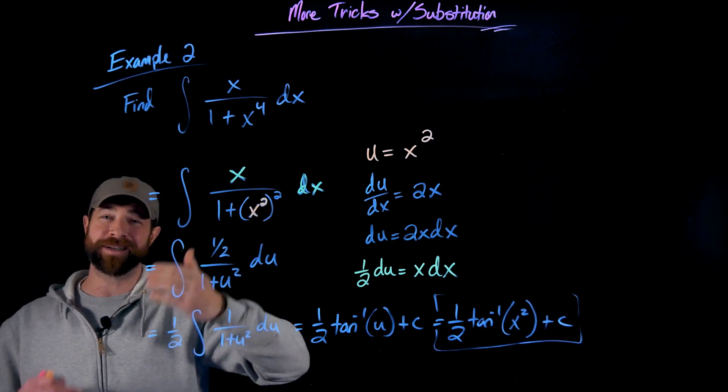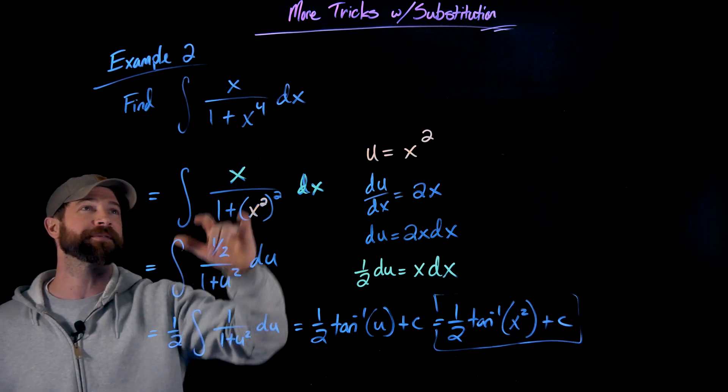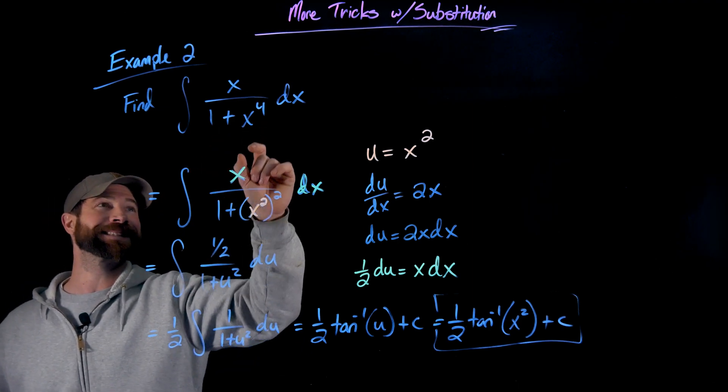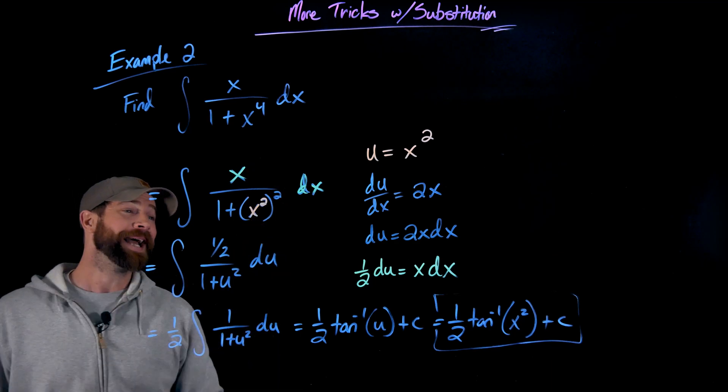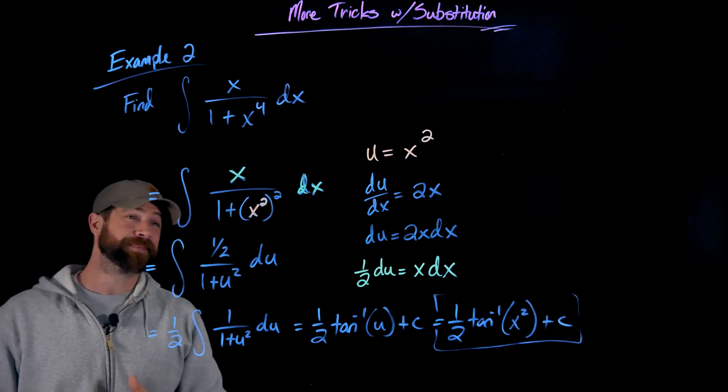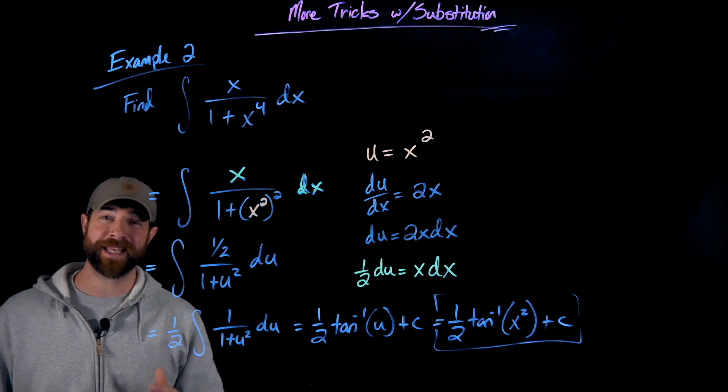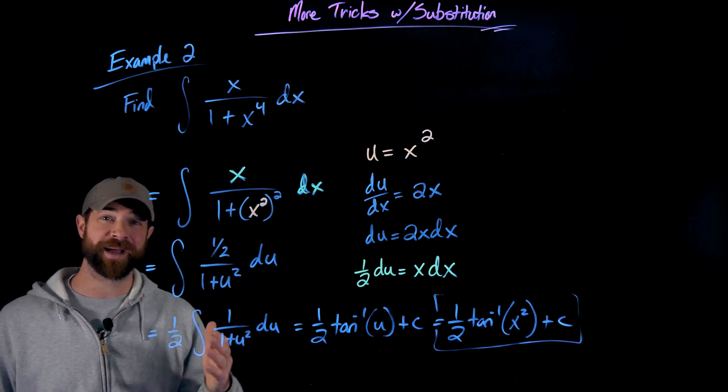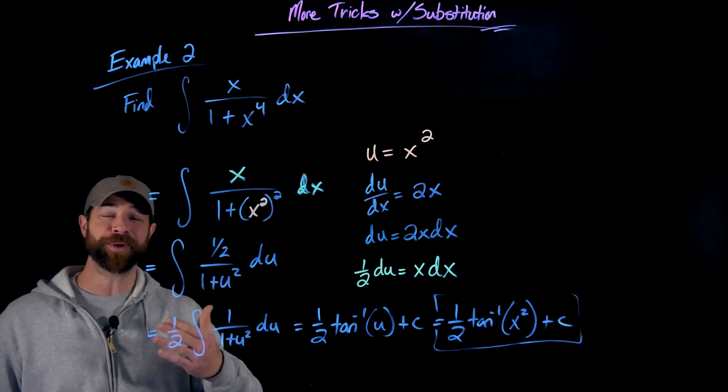Because this bottom, this denominator kind of looks like the tan inverse derivative. Can I manipulate this? That's an important trick. And again, as said before, to get good at this, the really thing you have to do is actually try a bunch of u substitutions and realize what sucks,